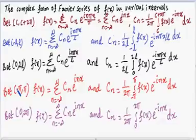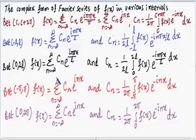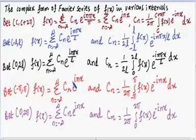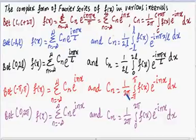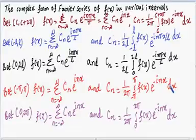Between the interval −π to +π, f(x) = Σ (n = −∞ to +∞) c_n · e^(inx), and c_n = (1/2π) · ∫[−π to +π] f(x) · e^(−inx) dx.